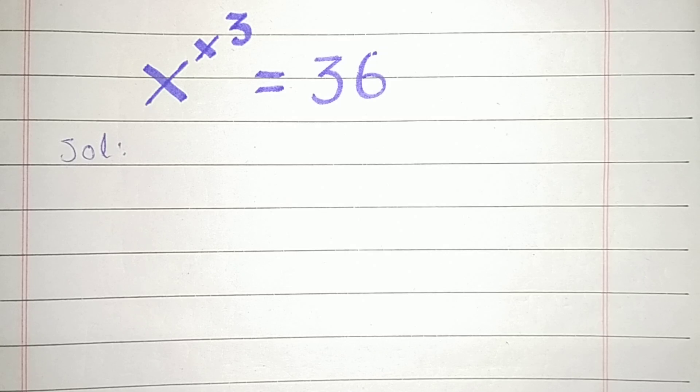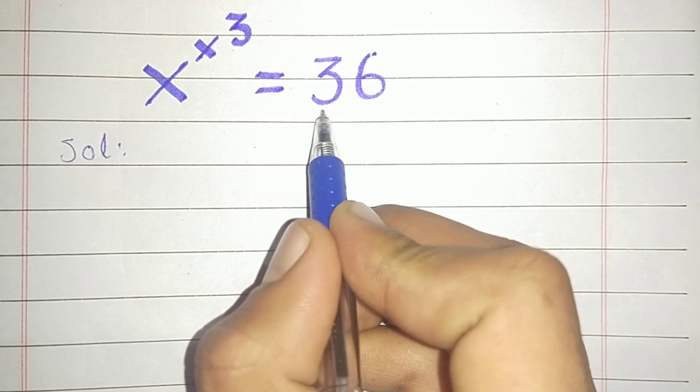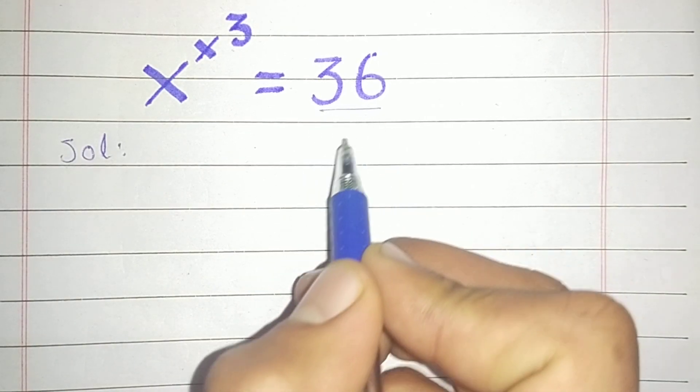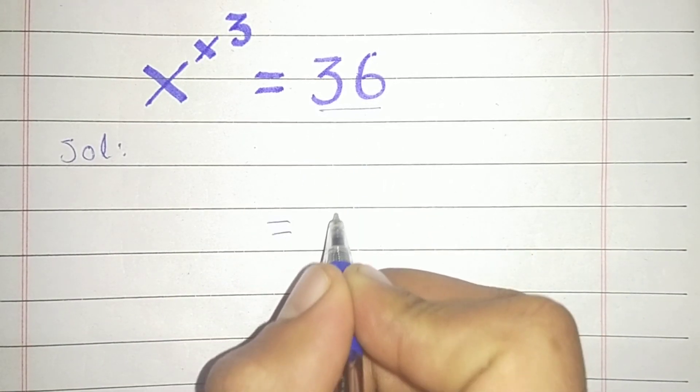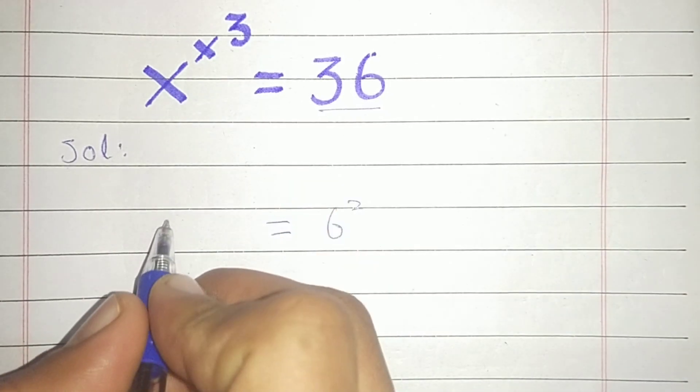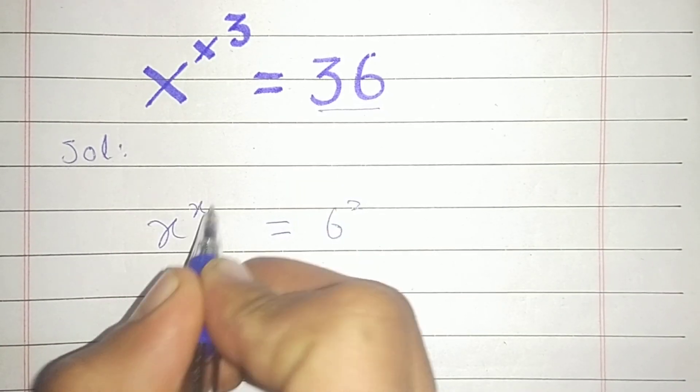Everyone, in this video we are going to solve this interesting math equation. We have x^(x^3) = 36. 36 equals 6^2, so this is equal to x^(x^3) = 6^2.